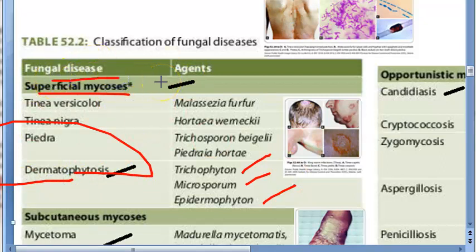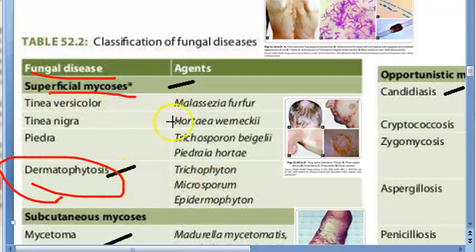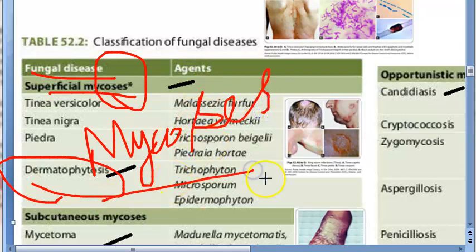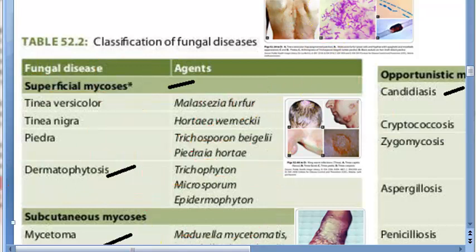Superficial means it affects the skin, hair, nails, etc. It is caused by Trichophyton, Microsporum, and Epidermophyton. These are the three fungi, the agents that can cause dermatophytosis.